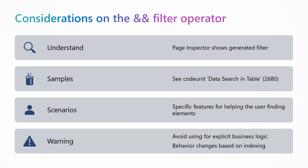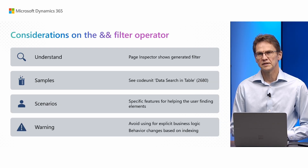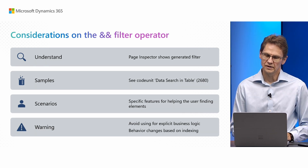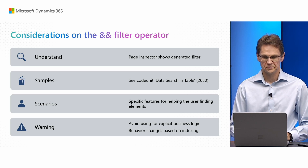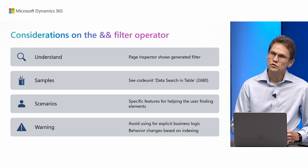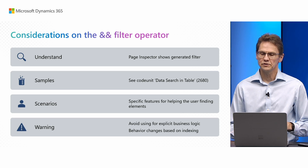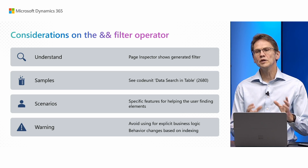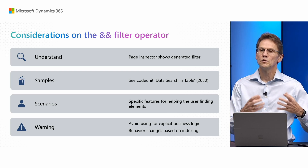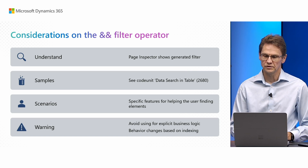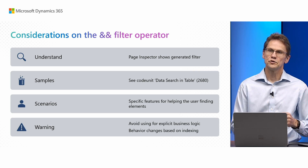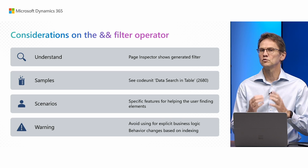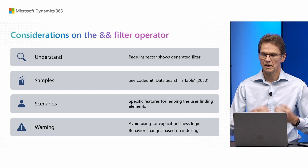There are some considerations when you use the && filter operator for text search. First, the syntax can be a little hard to grasp — you saw the trick with using the page inspector to show the generated filters. You can see samples of the code in the Data Search in Table codeunit. The scenarios where you want to use this are where you implement specific features to help users find elements. You would normally avoid using this for explicit business logic — where you're better off using existing equals filters — also because the behavior changes based on whether the user has enabled modern search and whether the field has been optimized for text search.